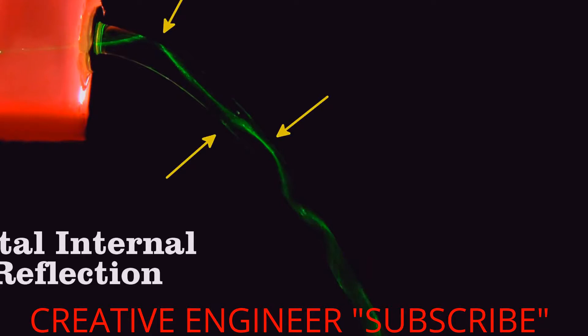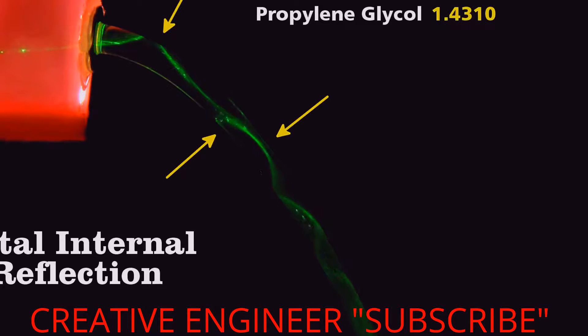This occurs because there's a difference between the index of refraction of the guide material, here propylene glycol, and the outside, air in this case.